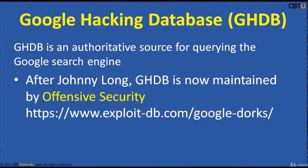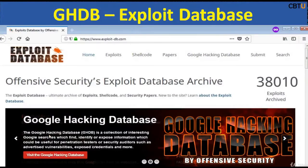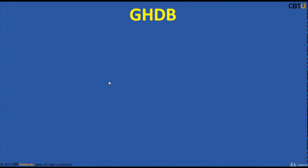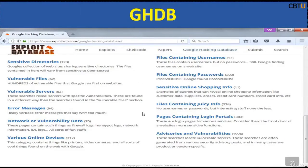In GHDB you will find queries for files containing usernames, vulnerable servers, files containing passwords, and more. Let us explore the Google Hacking Database and Exploit Database. This database is the ultimate archive of exploits, shellcode, and security papers. You can see here 38,000 exploits are archived under this Google Hacking Database — they are categorized and the database is searchable.